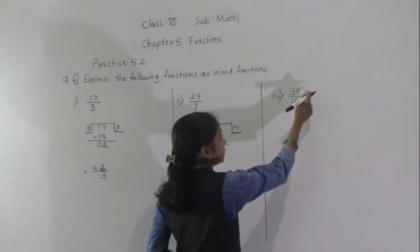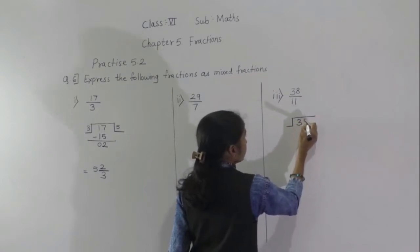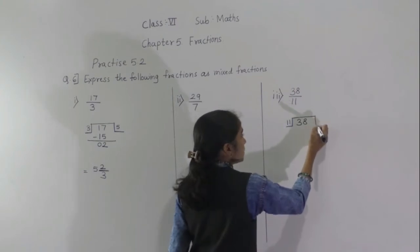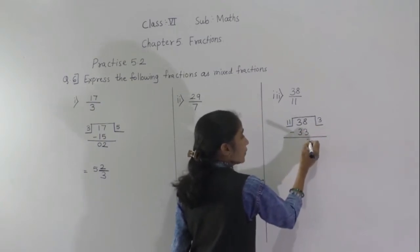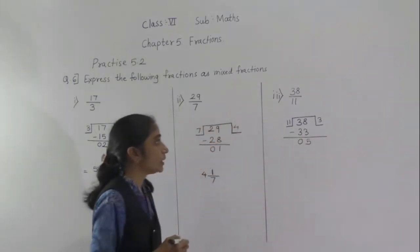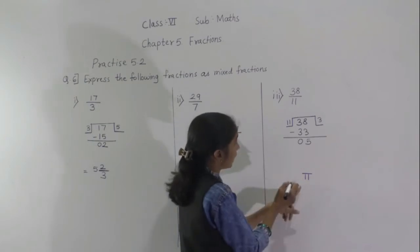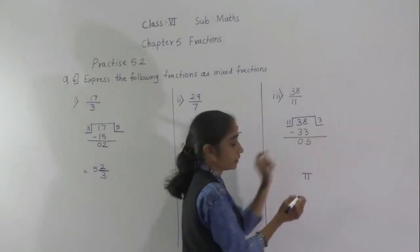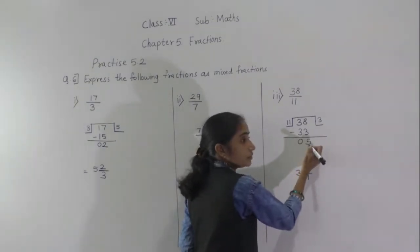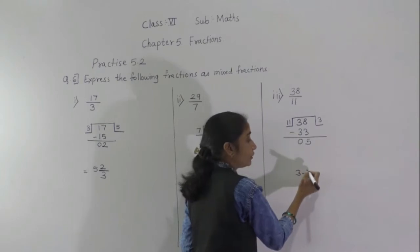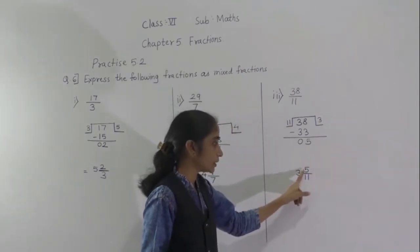Now solve this example: 38 upon 11. So 38 divided by 11. 11 threes are 33, remainder 5. The denominator is 11, write it as it is. The quotient is 3, write it as the whole number part. The remainder 5 we write as the numerator.